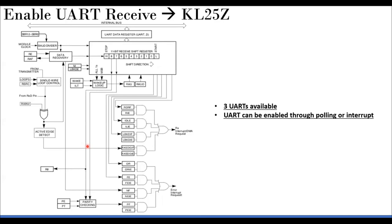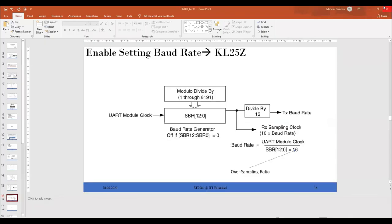The Freedom board has three UART options: UART0, UART1, and UART2. These can be enabled using polling or interrupt-based approaches.